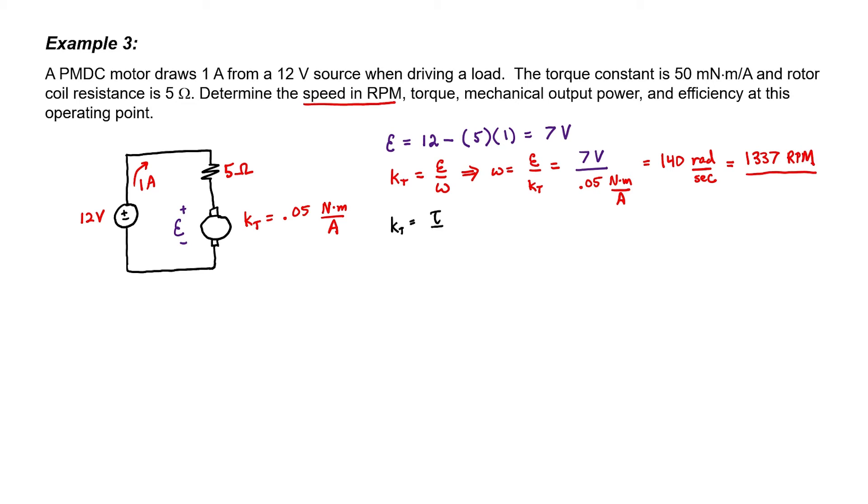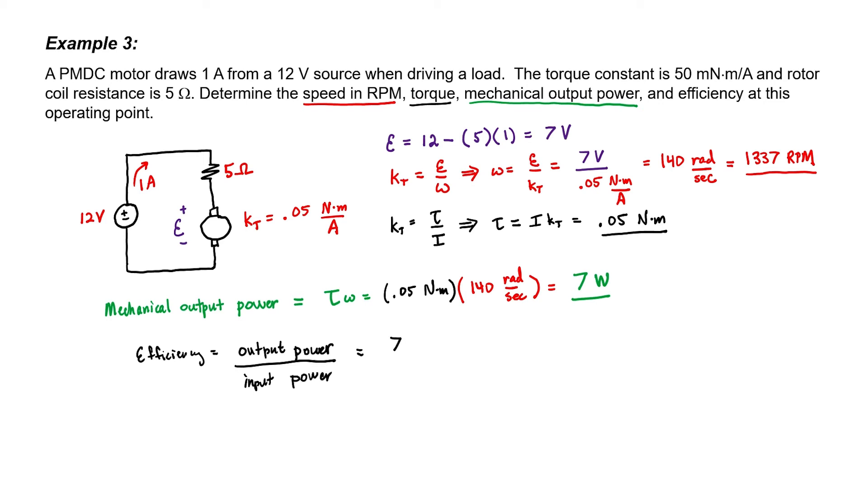Since the torque constant and the back EMF constant are equal, I have enough information to calculate the torque, since I already know the current. The mechanical output power is always related to the actual torque developed. Keeping everything in SI units, it's not difficult to find that the mechanical output power is 7 watts. The efficiency relates the output mechanical power to the input electrical power. In this case, it's 58.3%.